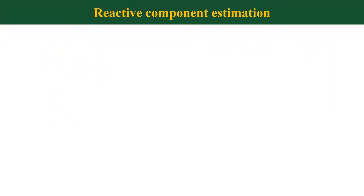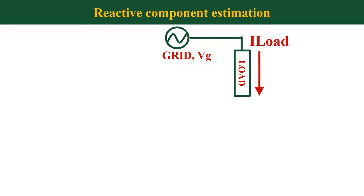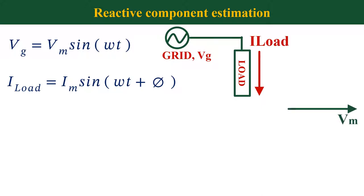Now I will explain you how do we estimate the reactive component in the load current. Imagine that we have a load which draws reactive current connected to the grid. I am considering a RC load. Now the grid voltage Vg can be written as Vg is equal to Vm sin omega t. And load current can be written as Iload is equal to Im sin omega t plus phi. Now I will draw the phasor diagram for this condition. First I will mark the grid voltage with amplitude Vm. Now I can draw the current phasor with amplitude Im which is leading the voltage by an angle phi. From the phasor diagram, we can clearly say that active component of load current is Im cos phi which is in phase with the grid voltage. And the reactive component of load current is Im sin phi which leads the voltage by an angle 90 degree. So our intention is to find the reactive component that is Im sin phi from the voltage and current information.